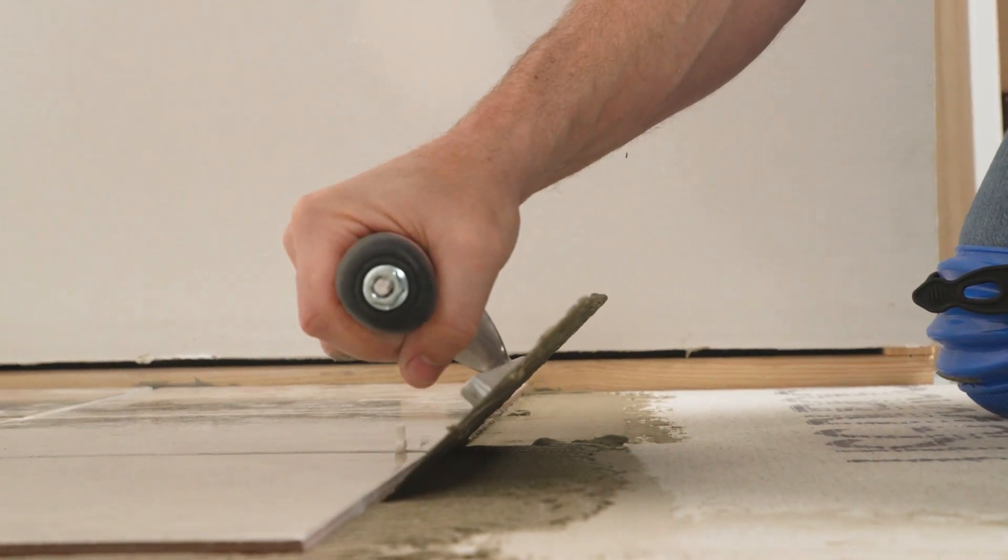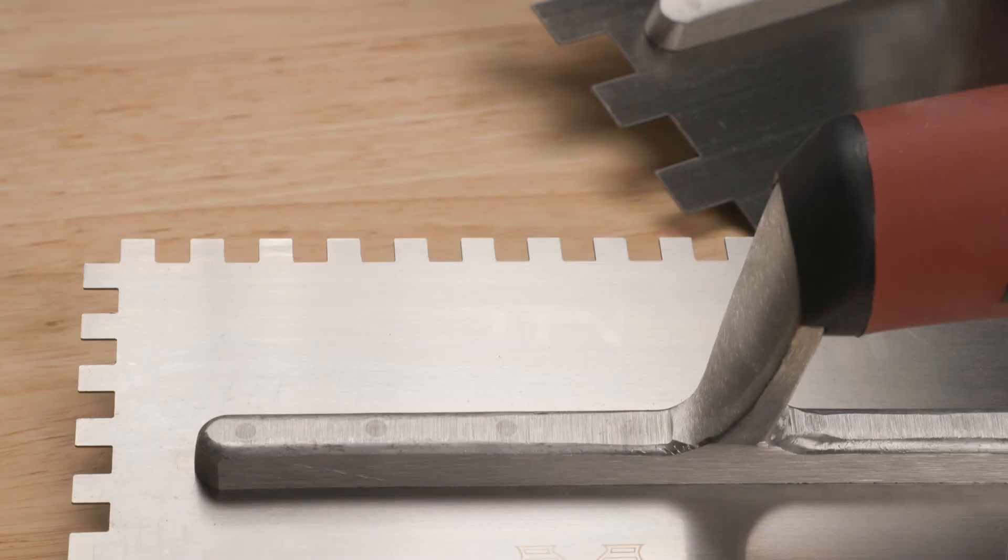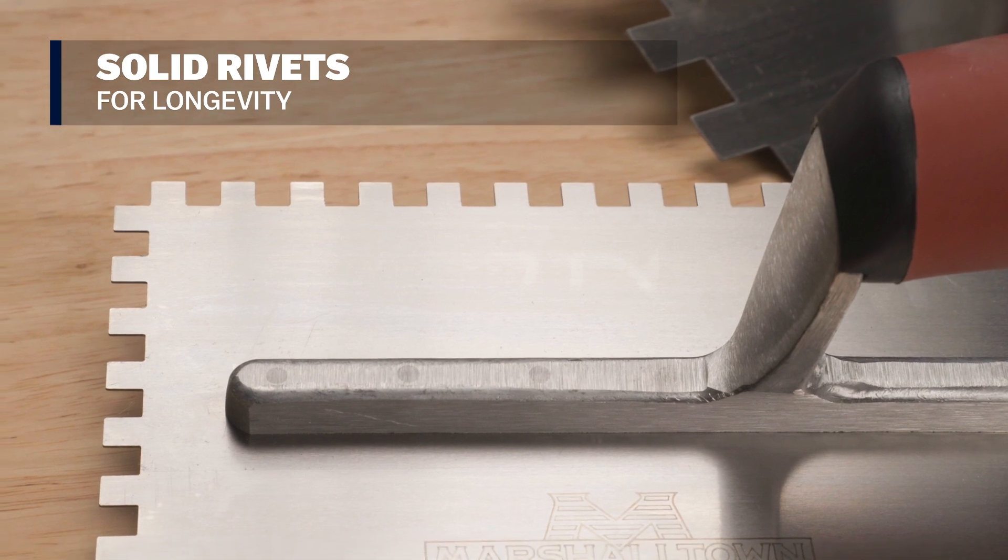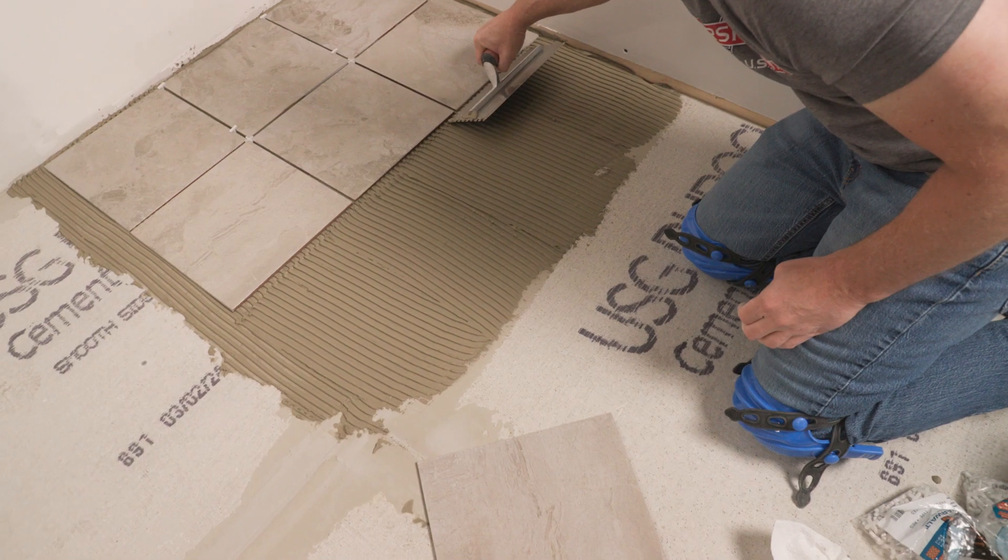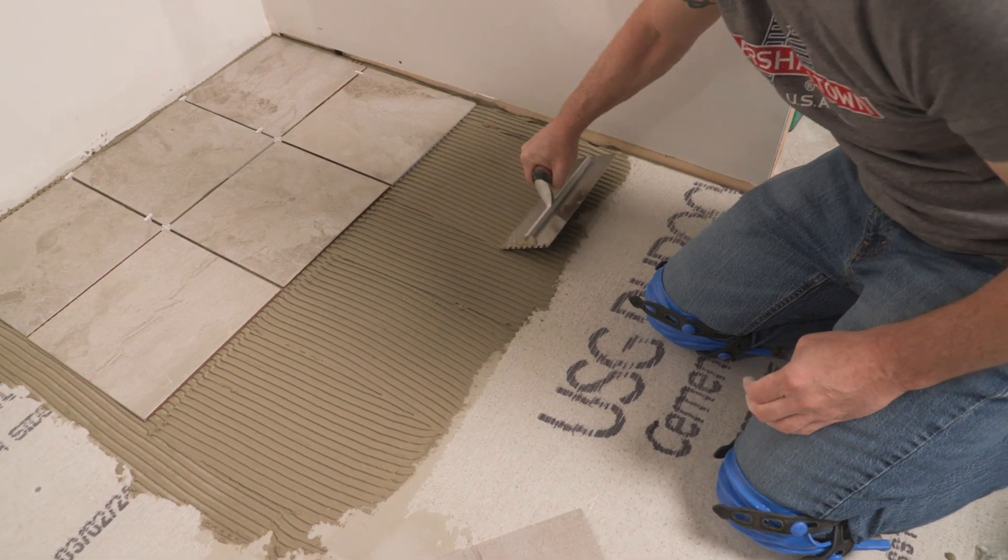The Marshalltown notched trowels are flexible yet durable, with lightweight aluminum alloy mountings, solid rivets, and a tempered steel blade. These trowels are built to last.